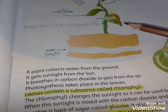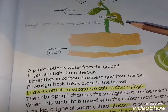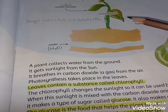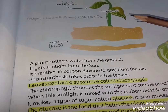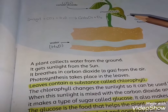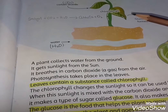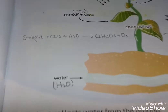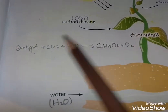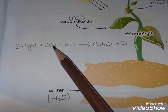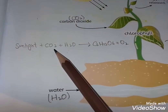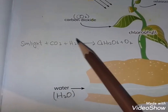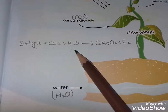When sunlight is mixed with carbon dioxide and water, it makes a type of sugar called glucose. It also makes oxygen. Sunlight plus carbon dioxide — CO2 is the chemical formula of carbon dioxide, and water — H2O is the chemical formula of water — produces glucose (C6H12O6) and oxygen (O2).